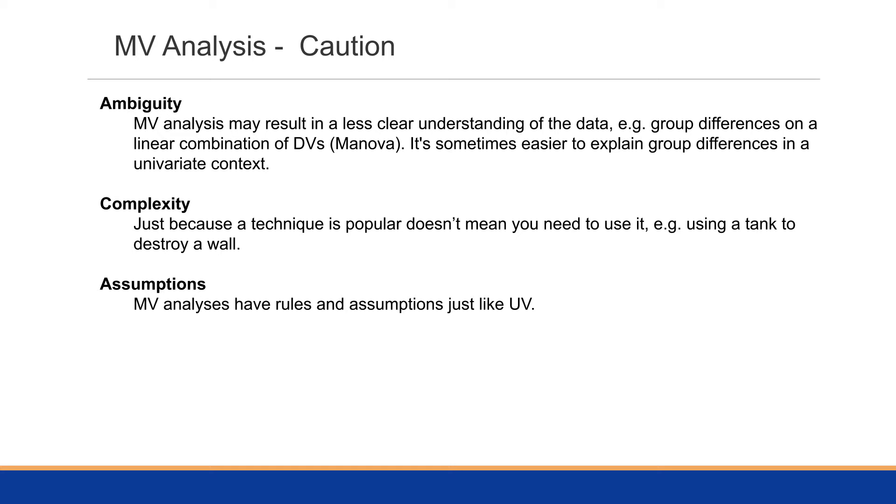It's often sometimes easier to explain group differences in a univariate context, such as male and female in test scores, or undergraduate-graduate in terms of salary. But when we start talking about graduate and undergraduate and we look at things like salary and type of job and potentially grade point average, all of those things begin to play into your analysis and may make it a little bit more difficult to interpret.